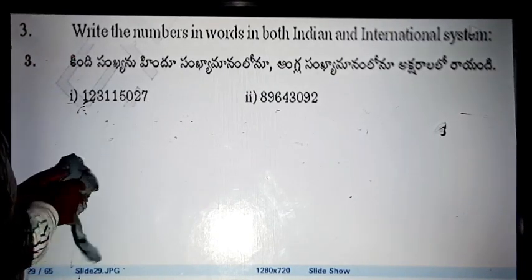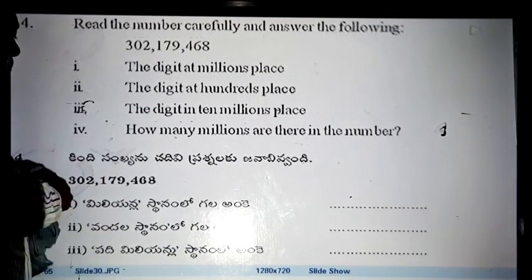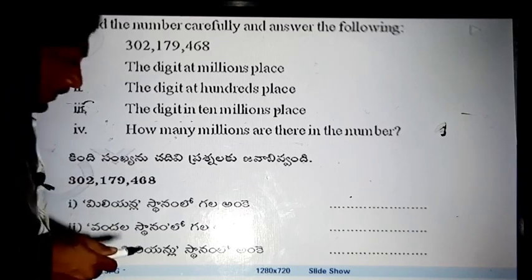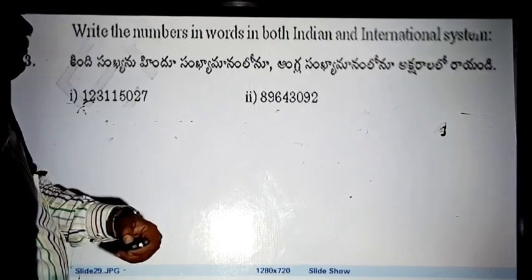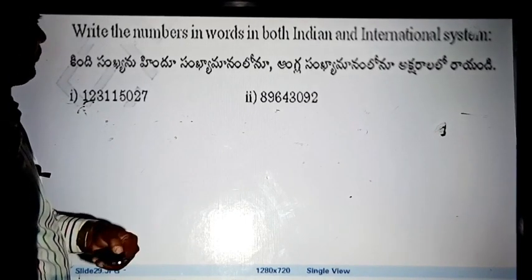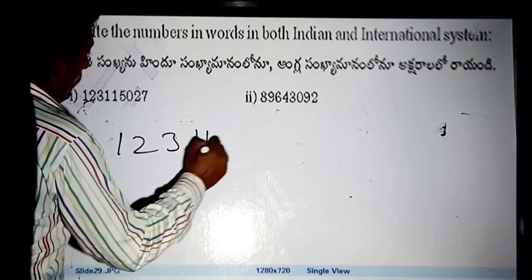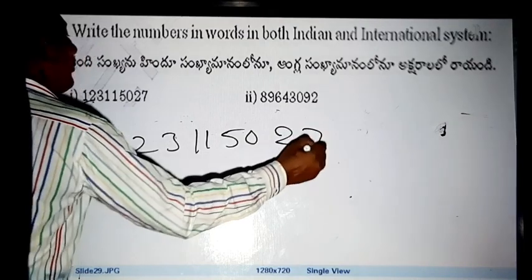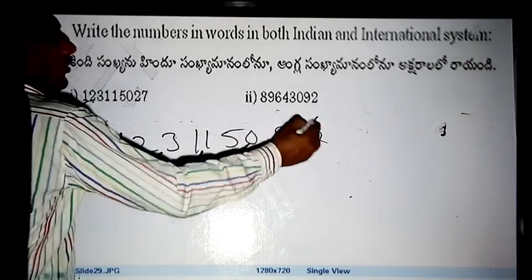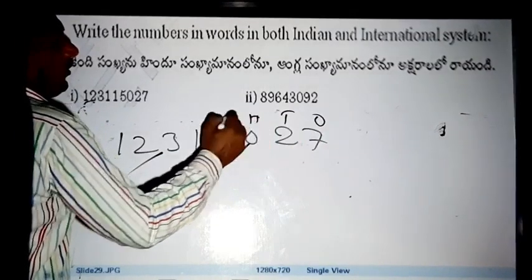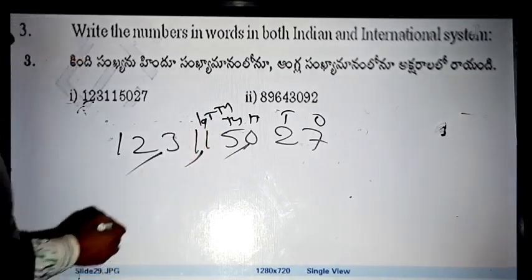Jagat Taddi Indian system. After three digits, after two digits, after two digits. Now look at it. Once, tens, hundred, thousand, ten thousand.